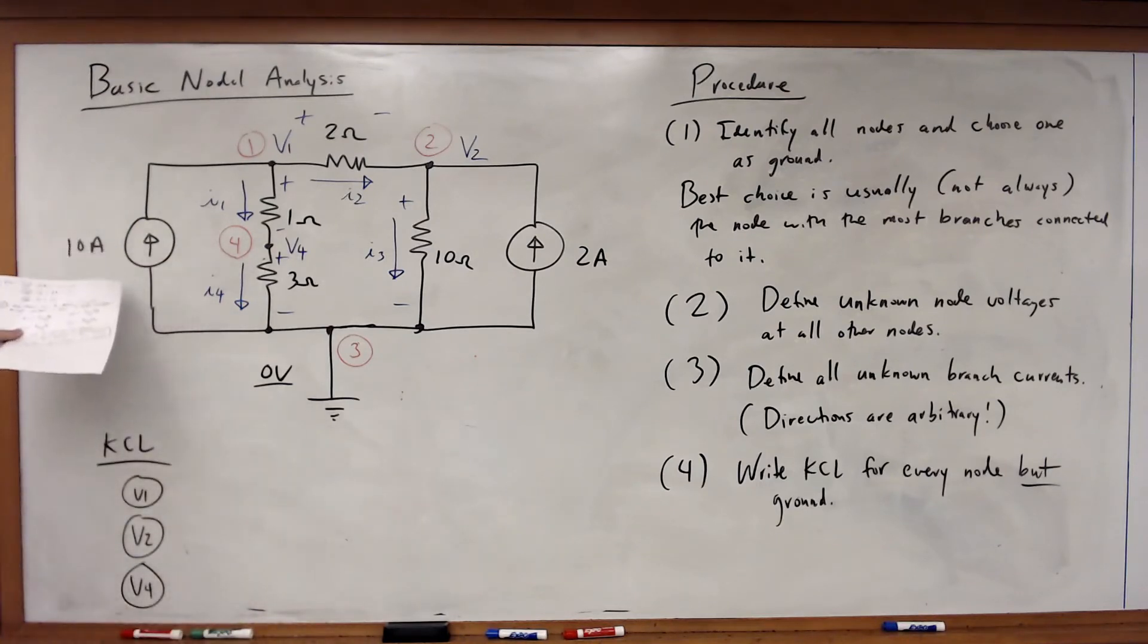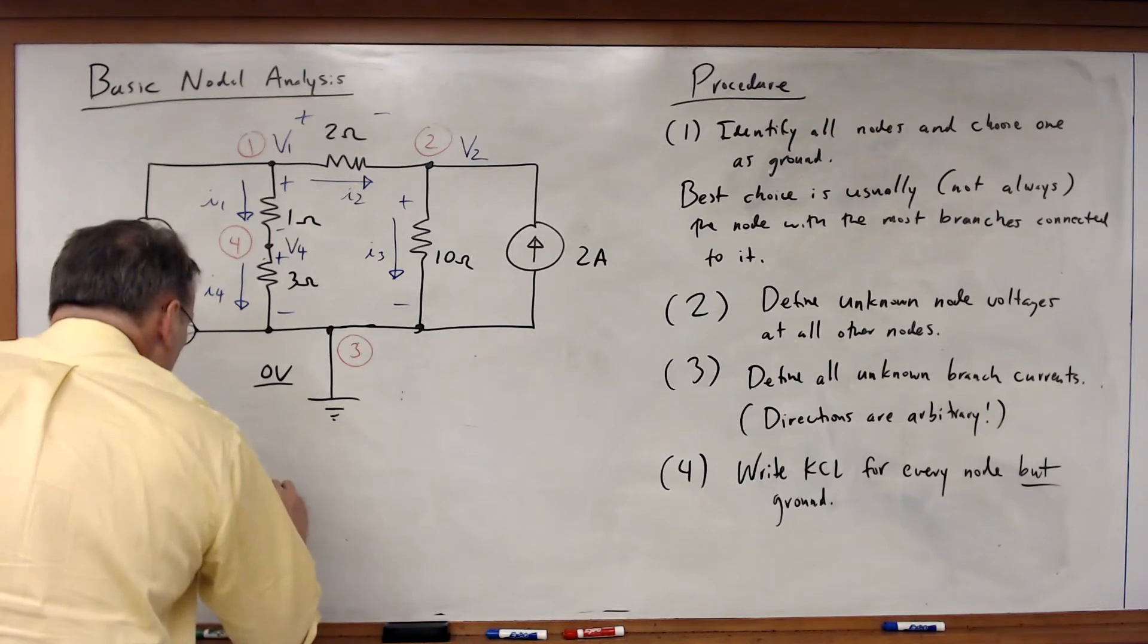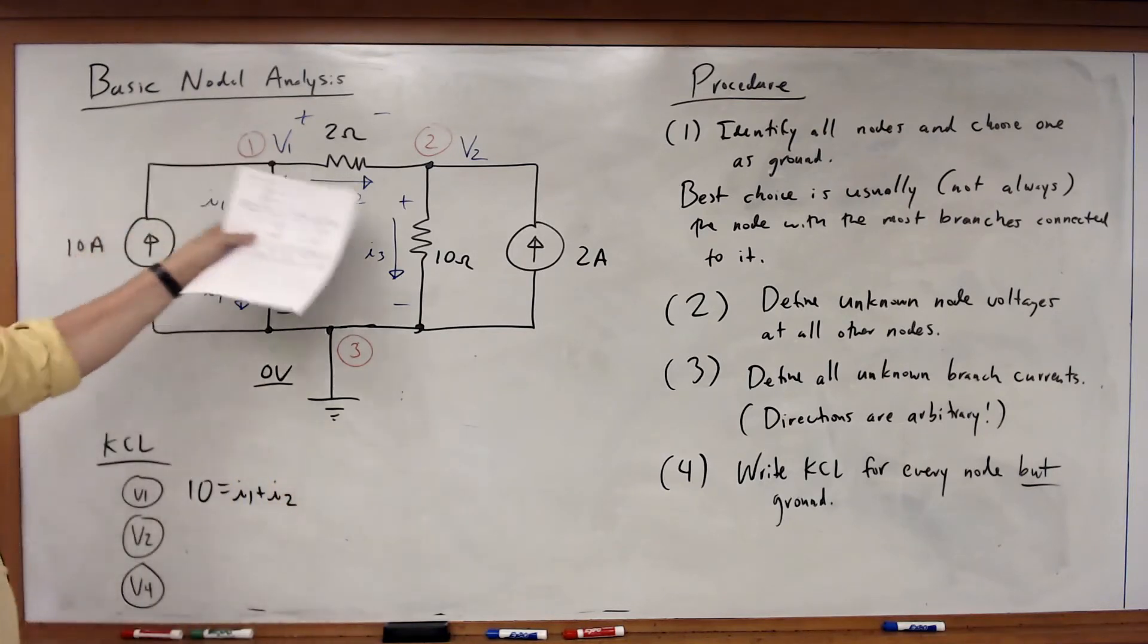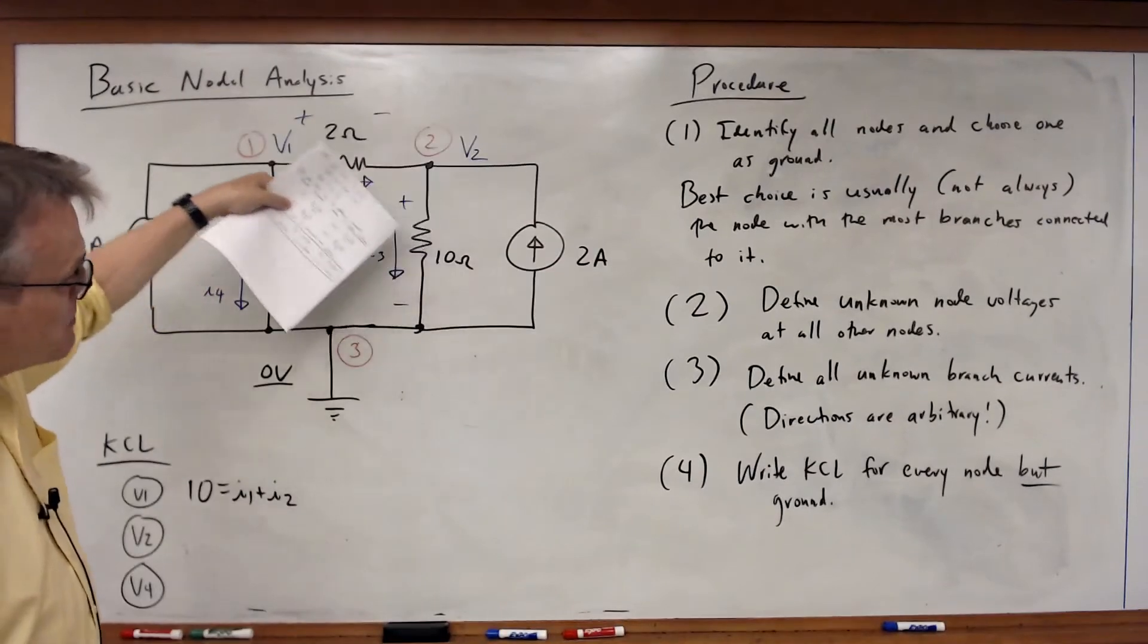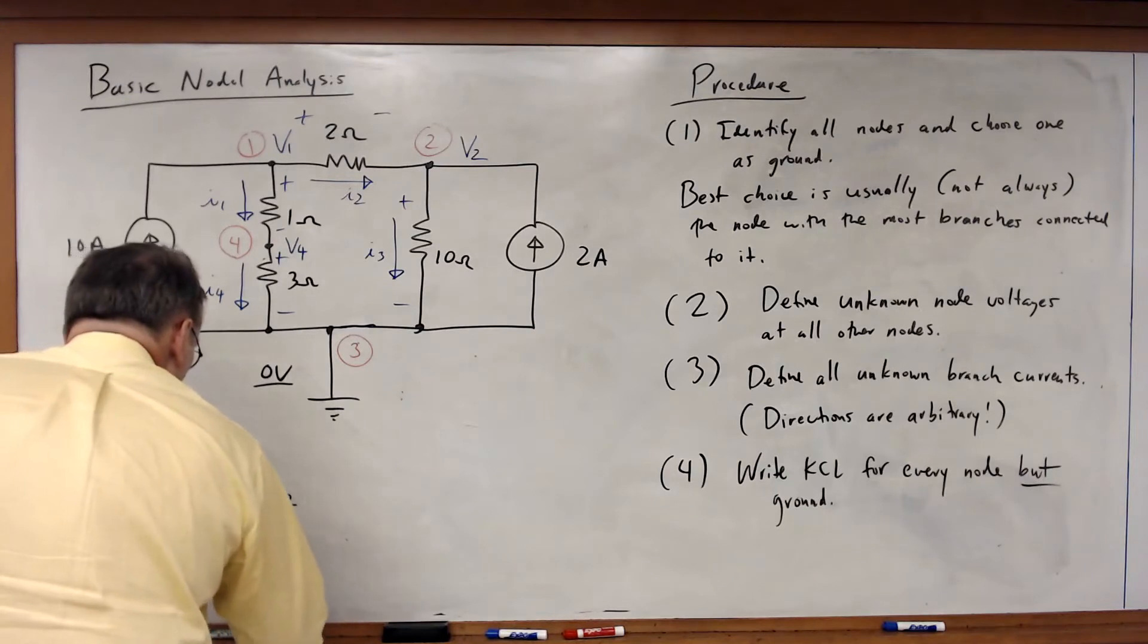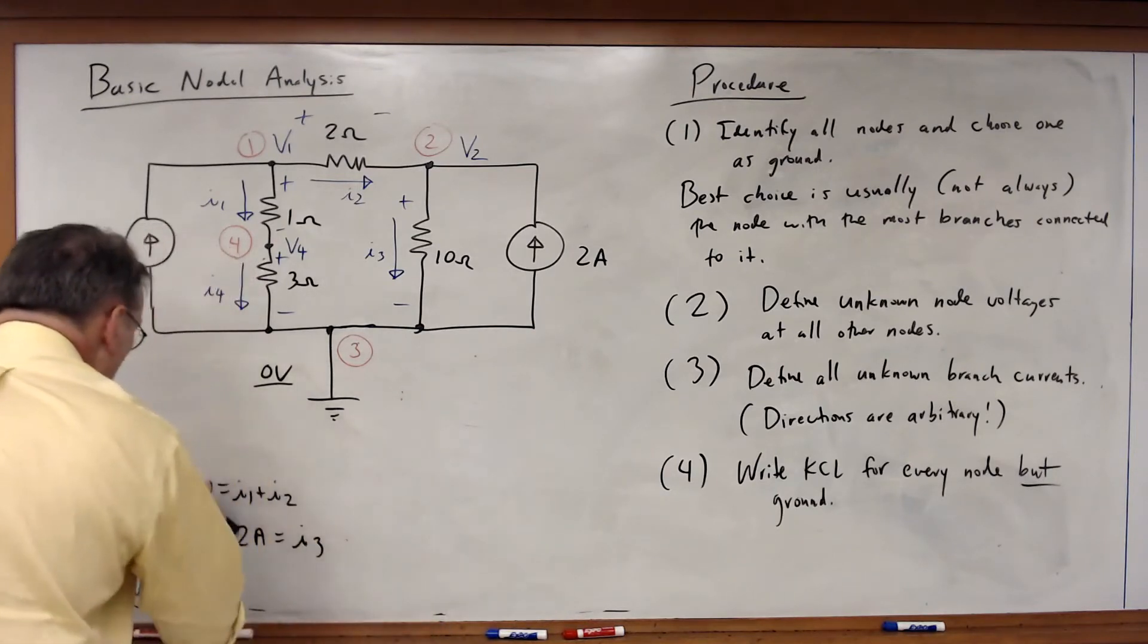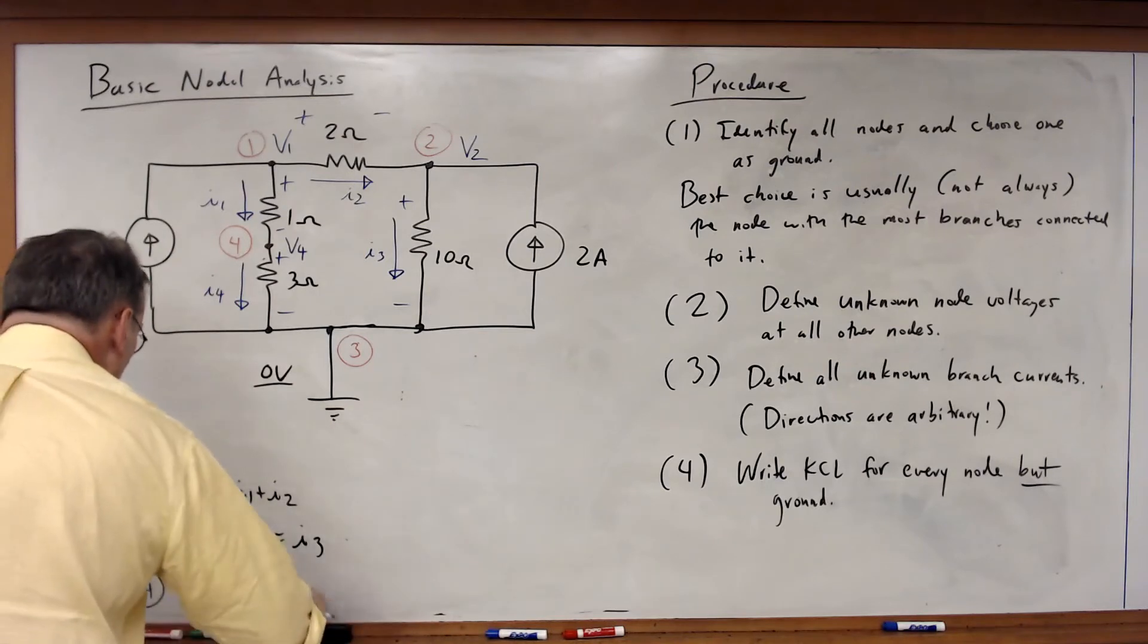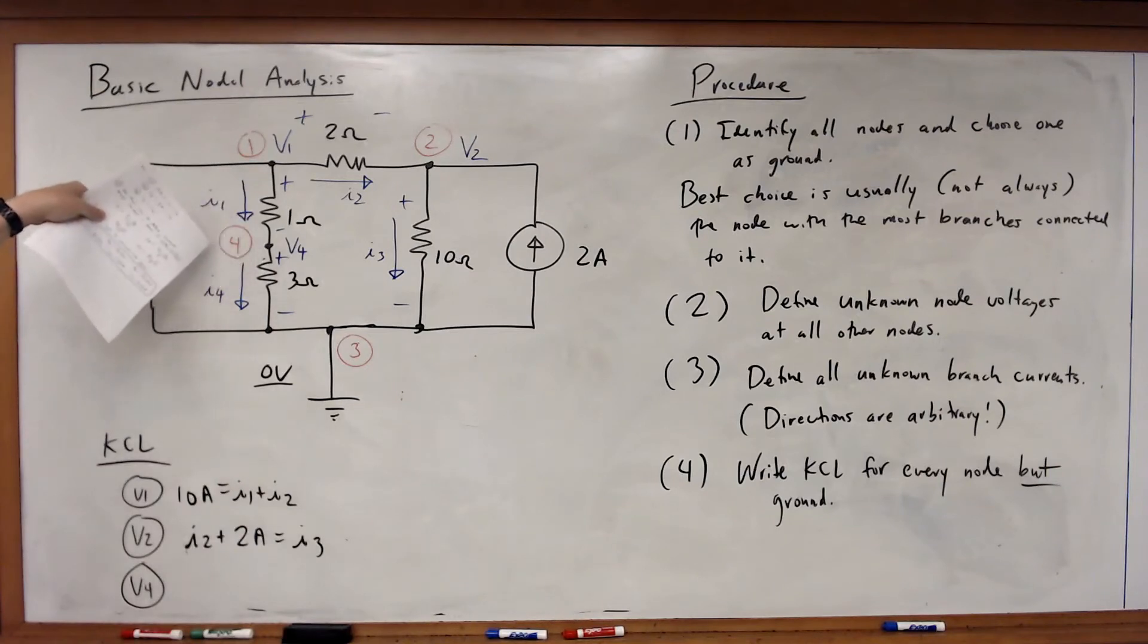For node 1, 10 amps going in is equal to I1 plus I2. For node 2, I2 going in plus 2 amps is equal to I3. And then for node 4, I1 is equal to I4.